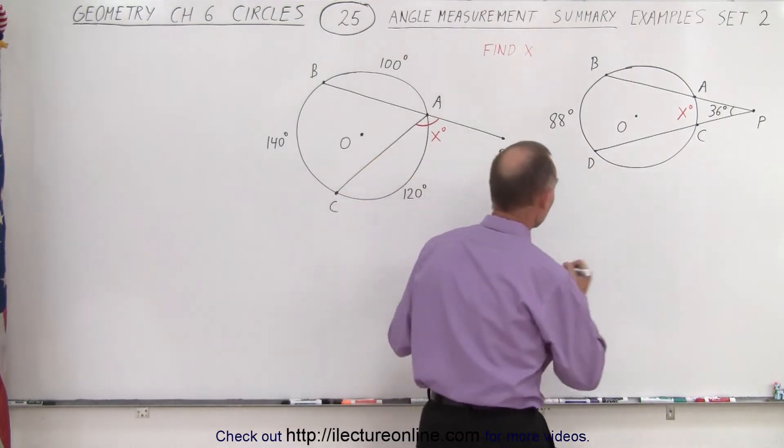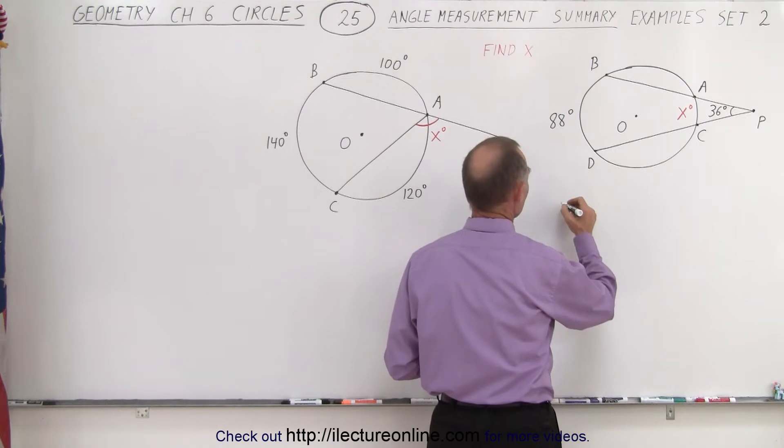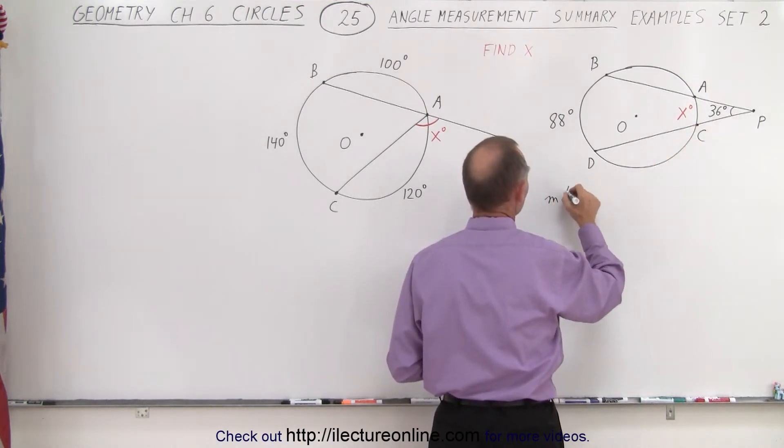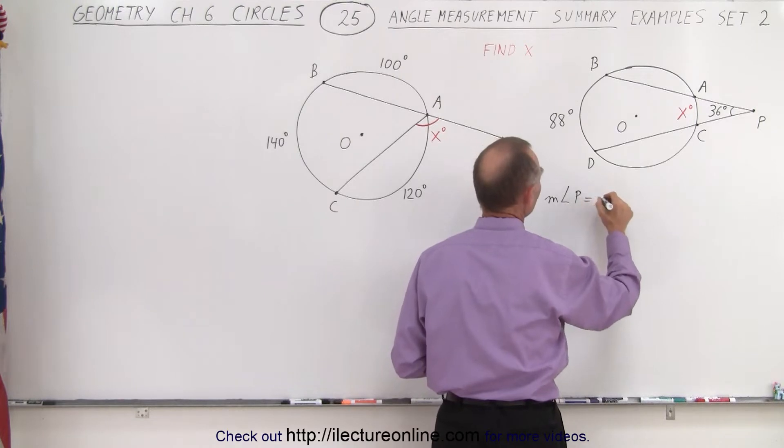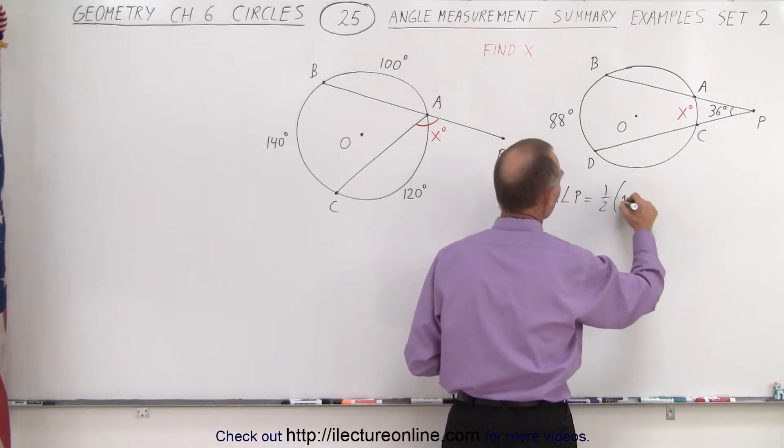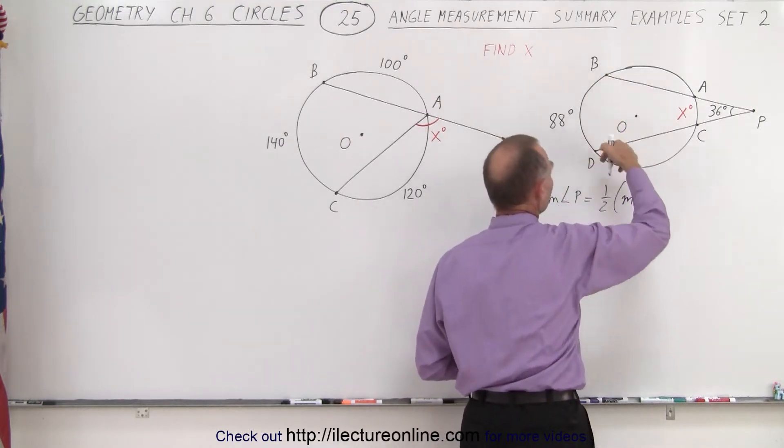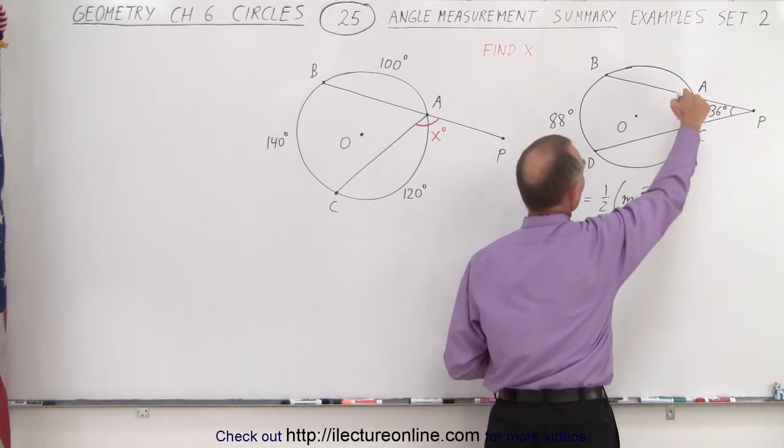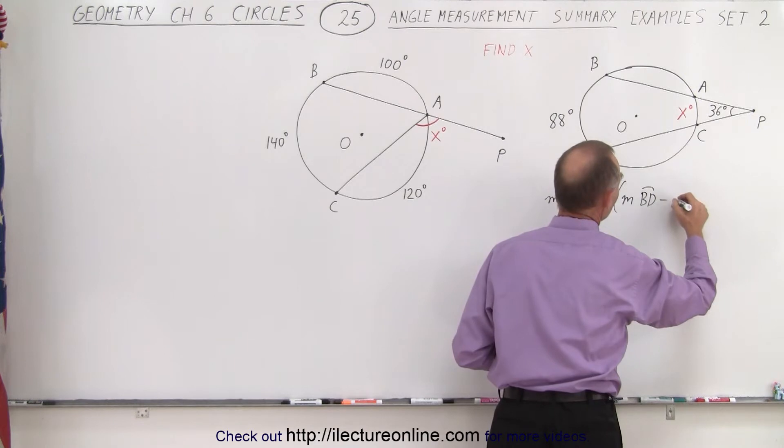We use the same rule we can say that the measure of the angle P is equal to one-half the measure of the arc length from B to D minus the measure of the arc length from A to C.